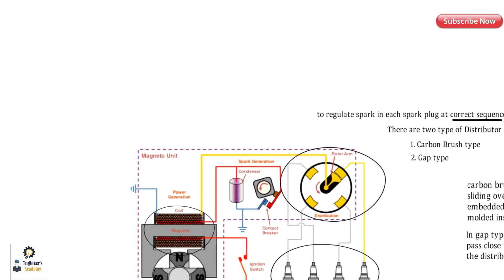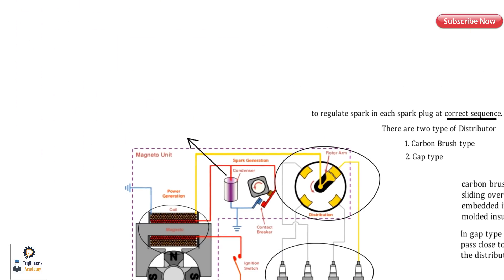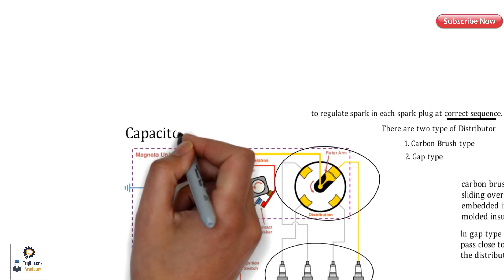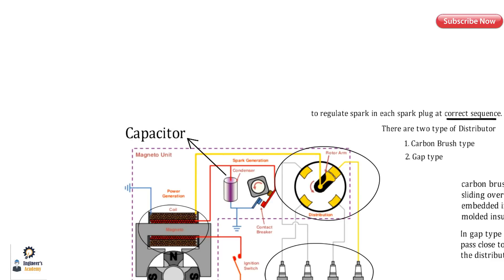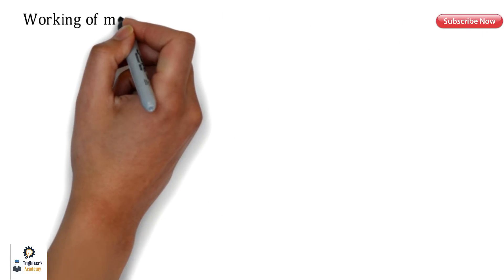The next part in the magneto ignition system is the capacitor, also called the condenser. It has two metallic plates that do not make electrical contact with each other, with insulating material between them.